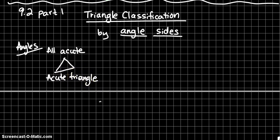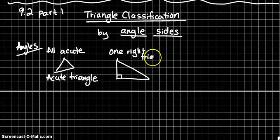If your triangle has one angle that is right, it is called a right triangle. Hint, you cannot have more than one right angle in a triangle. Why do you think that might be?